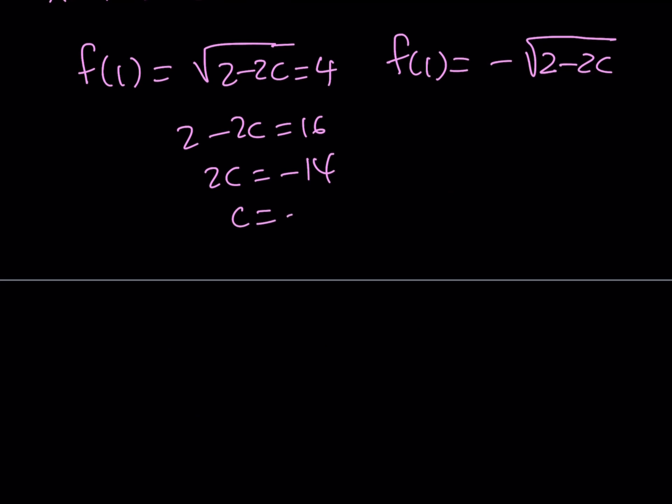If you solve the second one, you get the negative square root of 2 minus 2c is equal to 4. This implies that the square root of 2 minus 2c is equal to negative 4. But this is impossible because square root of something can never be negative. So we don't really get any solutions from here.